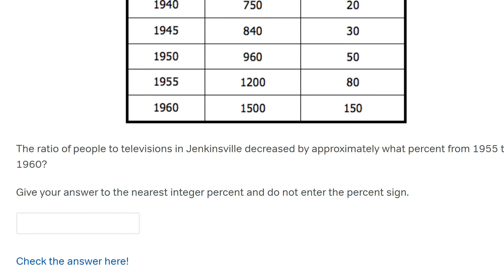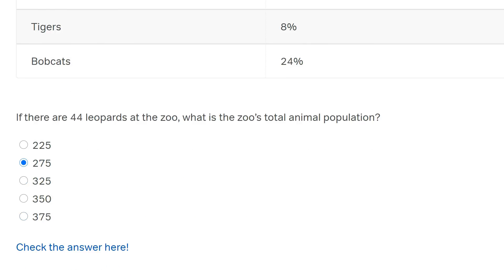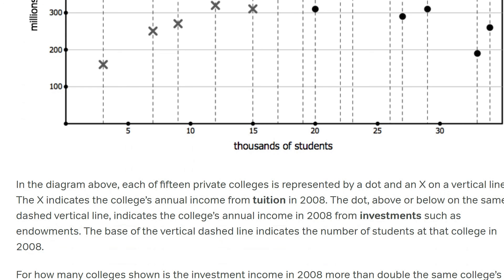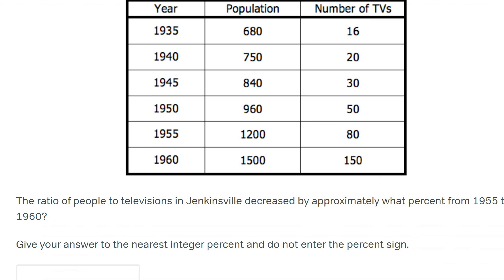So what have we learned from this video? First, basic percentages are essential to getting data interpretation questions right at every difficulty level — you have to know your percentages and ideally your percentage shortcuts, including using the keyboard on the calculator. Second, never be intimidated by complicated looking graphs and lots of words — the more complicated it looks, chances are the easier the actual math is. And finally, a special trick: you can express a ratio as a number by dividing the two amounts in the order asked. People to televisions — you do people divided by televisions. Hope you liked this video, and see you in the next one.